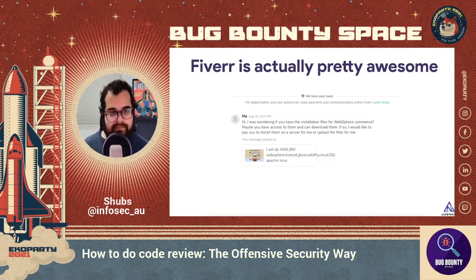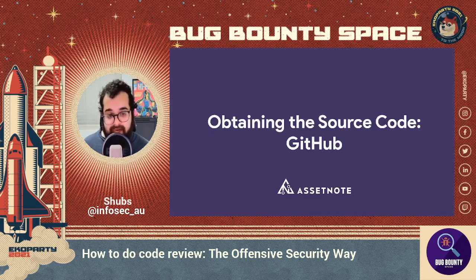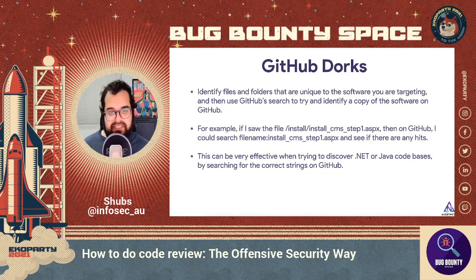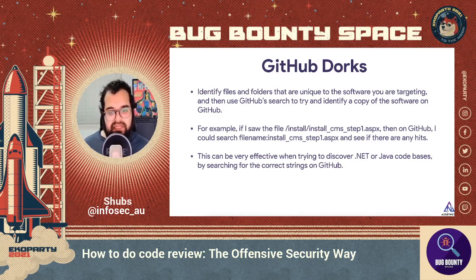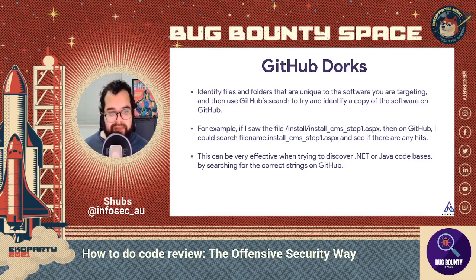Another technique is obtaining source code through GitHub. GitHub has a pretty effective file search: if you've identified a unique file name in your software — for example, install_cms_step1.aspx — you can search by filename on GitHub to see if there are any hits. This can be effective for .NET or Java codebases where you can find JAR files, ASPX files, and DLL files. A lot of people post their entire web root and sensitive information on GitHub, making this a really good way to discover software you typically don't have access to.